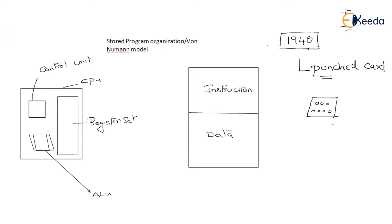Once the pattern of holes is made, you are ready with your program. This program must be fed to the computer system. The computer system occupied a huge space with no memory at all. The memory we use right now was not present in those days. If you want to execute a program, you collect punched cards, make a pattern of holes to write your program, and then feed all the punched cards to the computer system. Finally, you will be able to see the output on the screen.